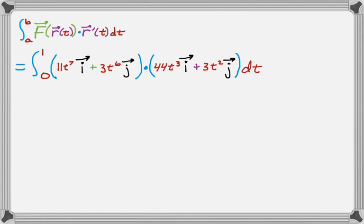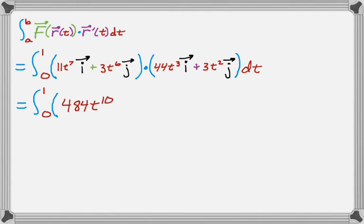Now we carry out the dot product. It's the integral from 0 to 1, and the dot product is first times first — multiplying the i components — we get 484t¹⁰, plus second times second, multiplying the j components, which gives 9t⁸, and then that is dt.